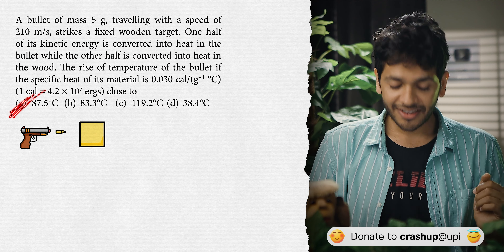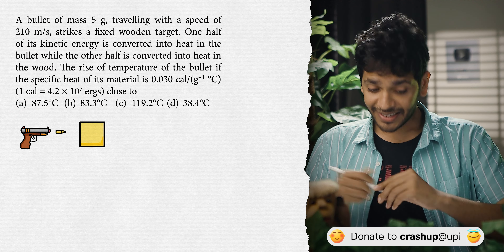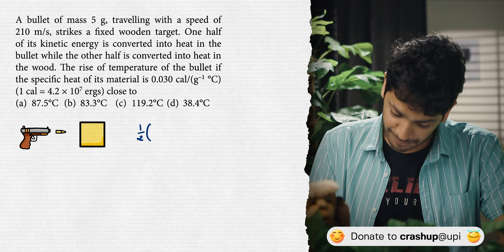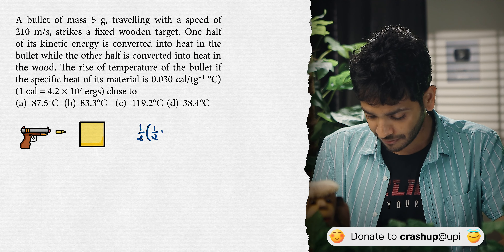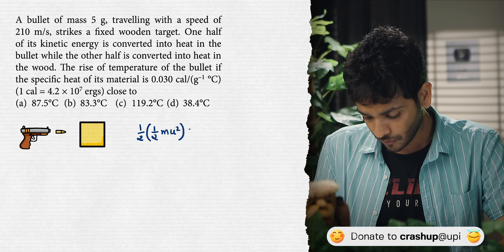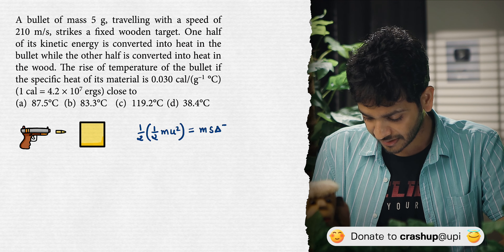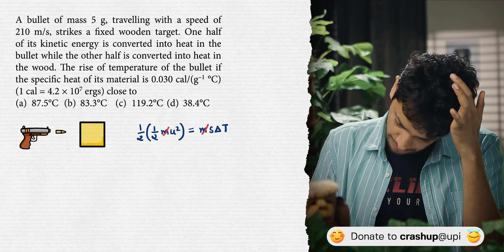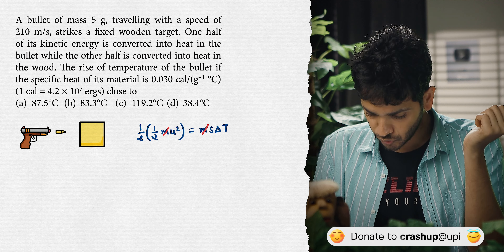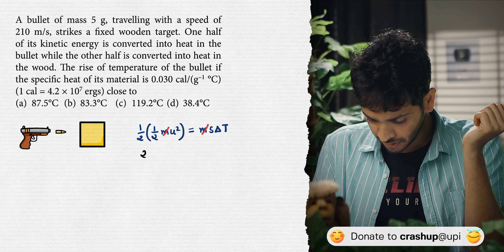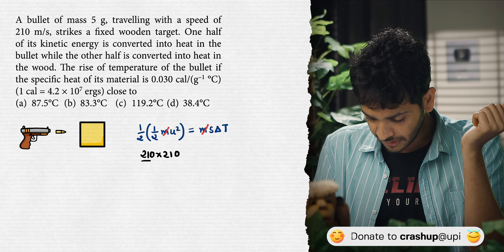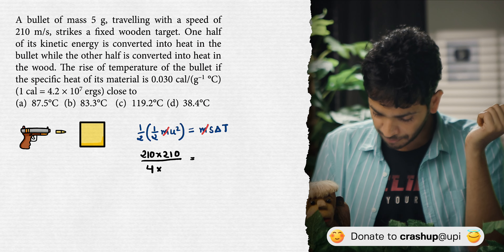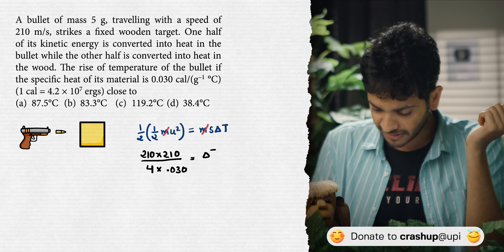The correct answer is option A. Let's see how. We have half of kinetic energy — putting the formula in directly, half into half m u² will be equal to ms∆T. Mass cancels with mass. Now substituting values: U = 210 m/s, so 210 × 210 divided by 4, divided by specific heat capacity 0.030, equals ∆T.